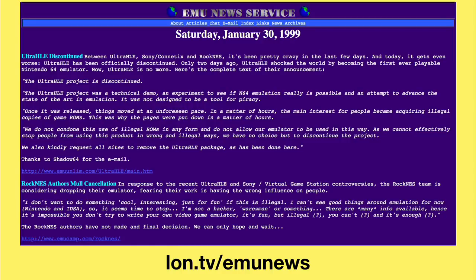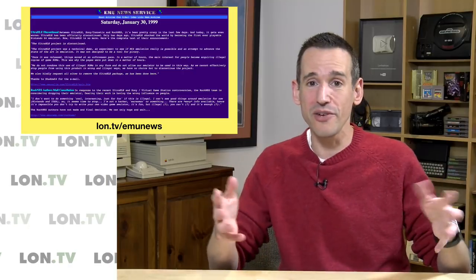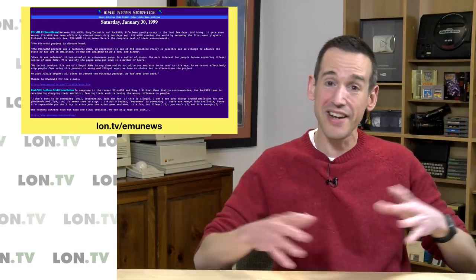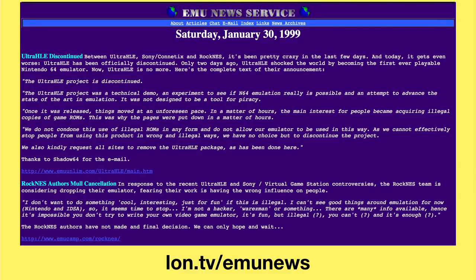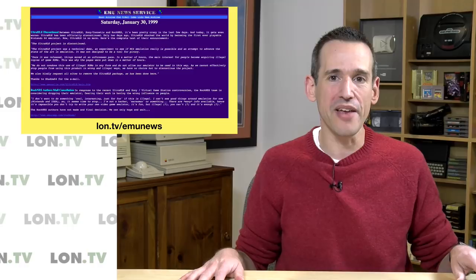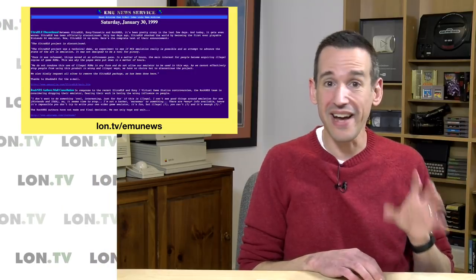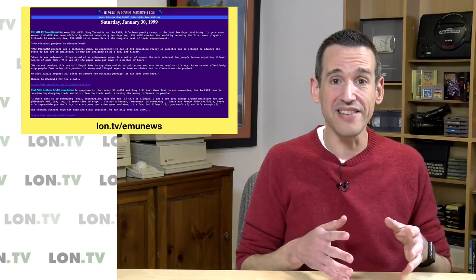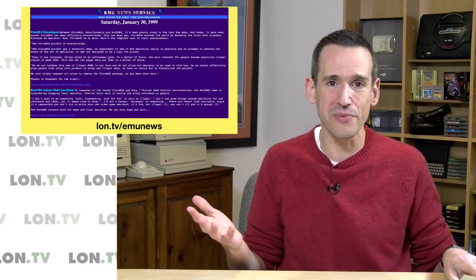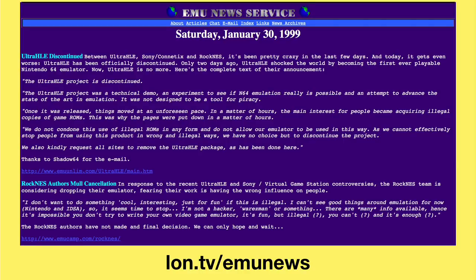There were also great news sites like the EMU News Service following all these rapid developments. It was crazy — you could wake up one day and suddenly a system you hoped might be emulated would be emulated perfectly. On the EMU News Service (at lon.tv/emunews on archive.org), the headline for January 30th, 1999 announces that a great emulator called Ultra HLE was being discontinued. Ultra HLE came out of nowhere, and it could run the Nintendo 64 in 1998-99 perfectly — in fact, better than the actual system did. The authors were so worried about being sued by Nintendo that they discontinued it.